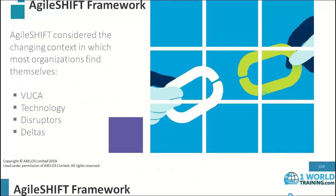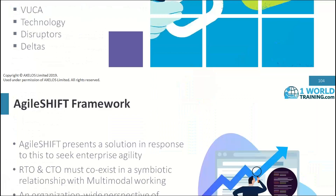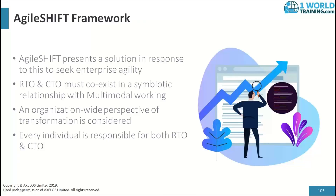AgileShift as a framework presents a solution in response to those four aspects — VUCA, technology, the disruptors, and the delta — to seek enterprise agility. Both the RTO and the CTO run the organization and the people coexist in a symbiotic relationship with multimodal working. An organization-wide perspective of transformation is then considered, and every individual becomes responsible for both running and changing the organization.